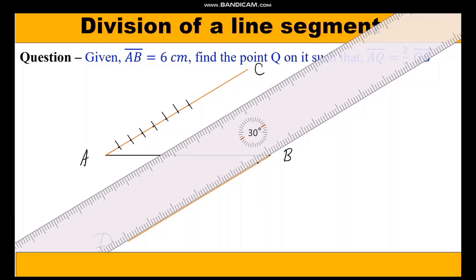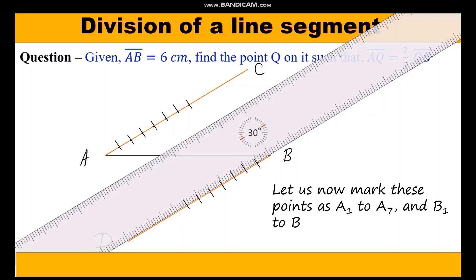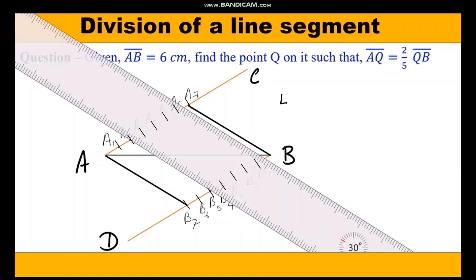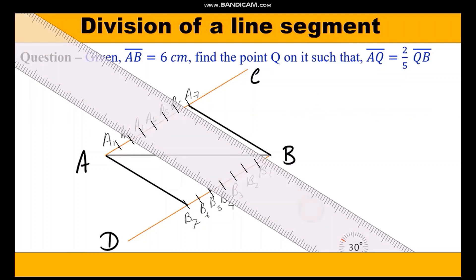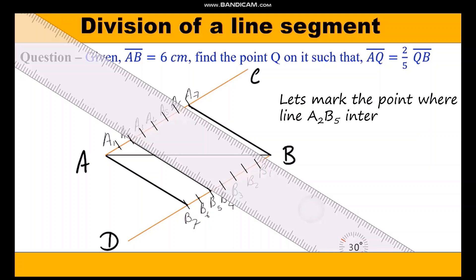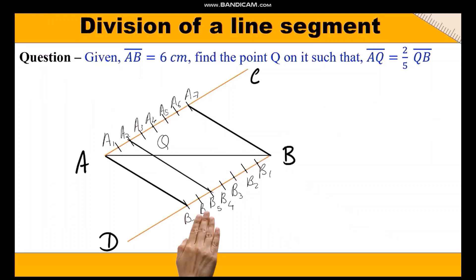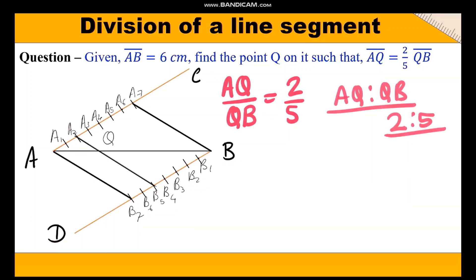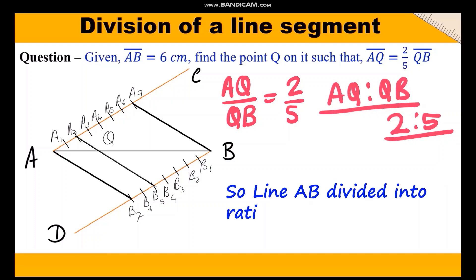Now we shall mark 7 points on AC and BD. Name them as A1, A2, A3, A4, A5, A6, A7 on AC, and similarly on BD we will mark from B1 to B7. We shall join A7 to B and B7 to A. Then we shall join A2 to B5, intersecting AB at Q, such that AQ is to QB is equal to 2 is to 5. Thus, we have divided the line segment AB internally in the ratio of 2 is to 5.